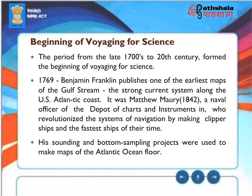Beginning of Voyaging for Science: The period from the late 1700s to the 20th century formed the beginning of voyaging for science. In 1769, Benjamin Franklin published one of the earliest maps of the Gulf Stream, the strong current system along the U.S. Atlantic coast. Matthew Maury (1842), a naval officer, revolutionized navigation systems by making clipper ships the fastest of their time. His sounding and bottom-sampling projects were used to make maps of the Atlantic Ocean floor.